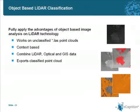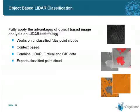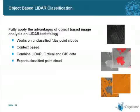Once you have your point clouds loaded into eCognition, you can make use of one of the big advantages of eCognition, which is the use of context for image analysis. Like in any other eCognition project, you can add any other raster or vector dataset to your project, so you can combine point clouds, raster datasets, and vector layers for classifying your areas.